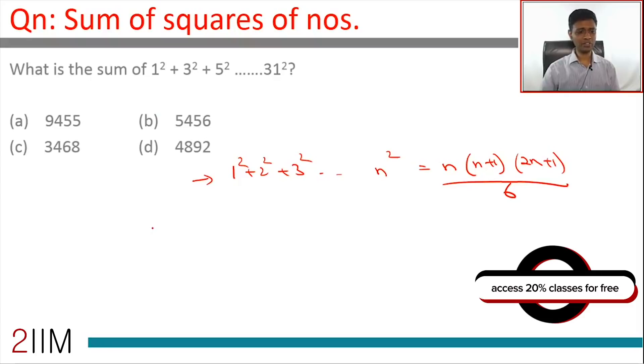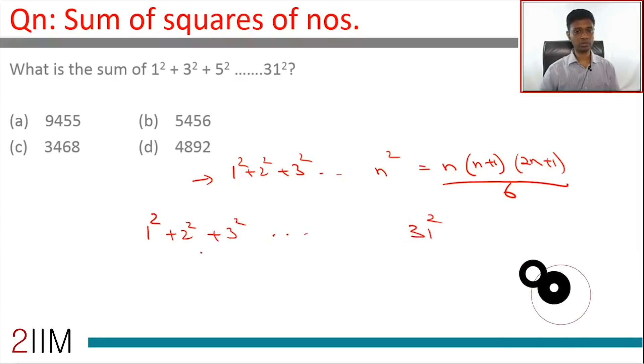How do we do this? Very simple. Treat this as 1² + 2² + 3² all the way to 31² from which we subtract 2² + 4² + 6² all the way to 30².